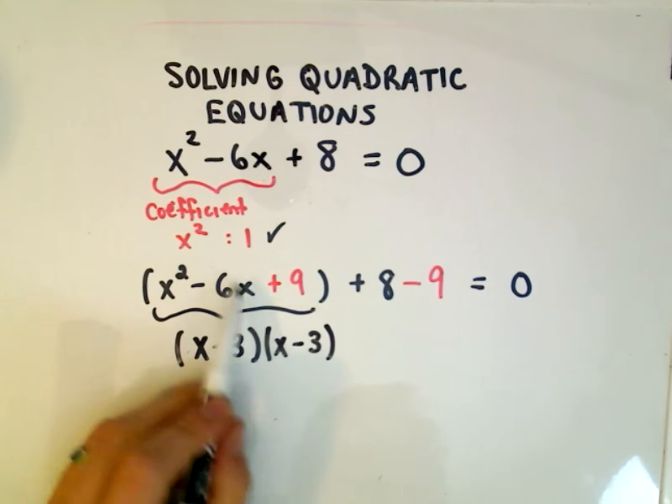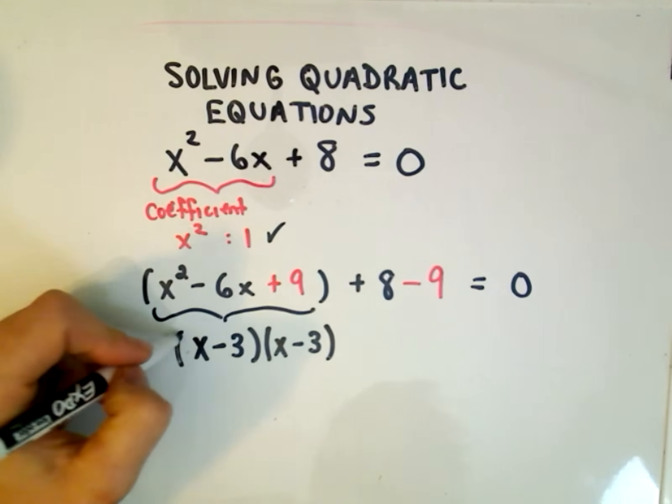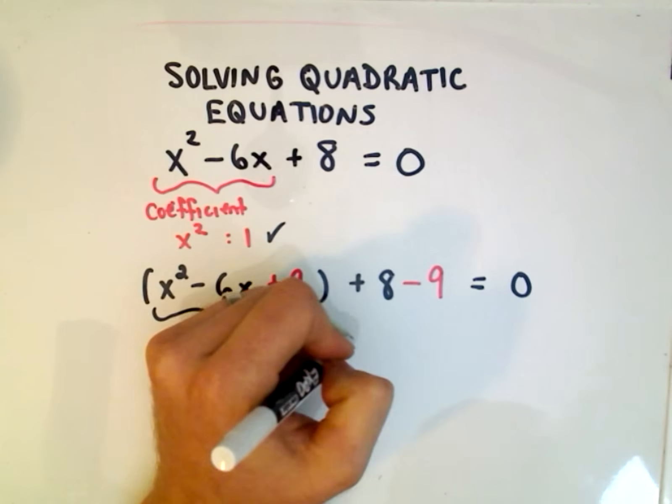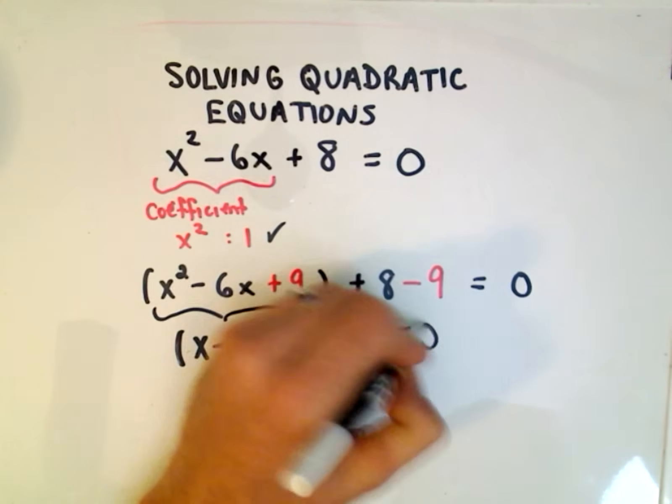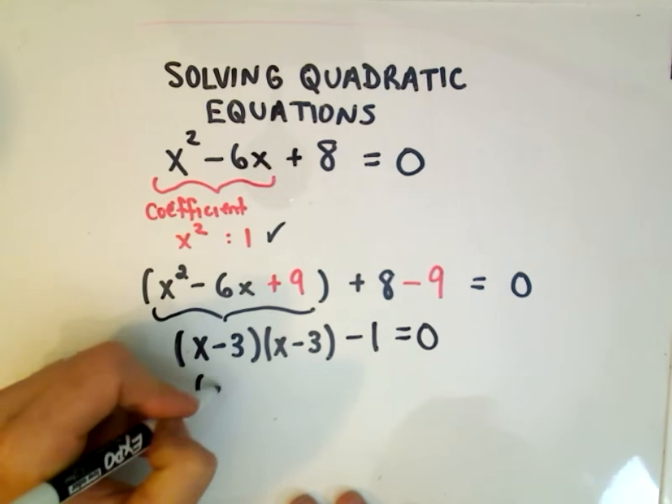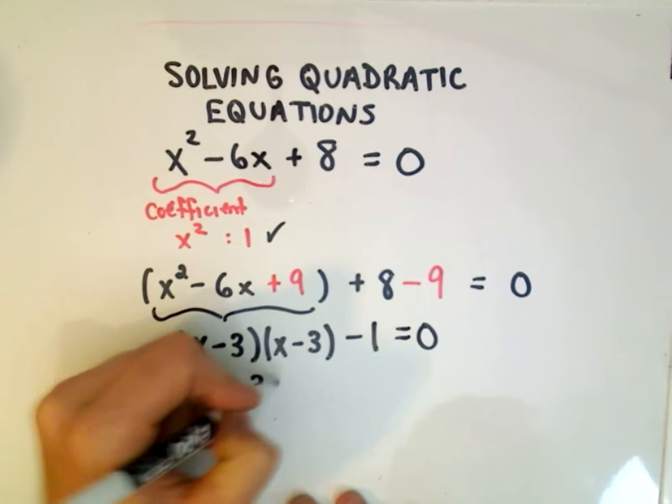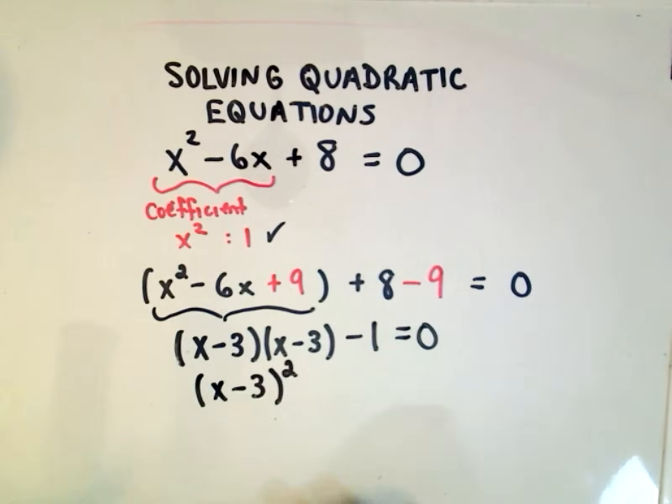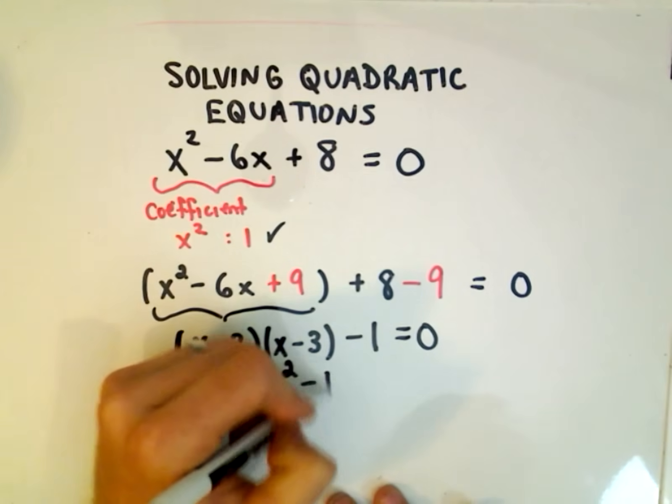If you take whatever 1 half of the coefficient on the x term was, it was a negative 3. That's what will go inside the parentheses. Positive 8 minus 9 is negative 1, equals 0. So now we write the first part as x minus 3 squared, minus 1 equals 0.